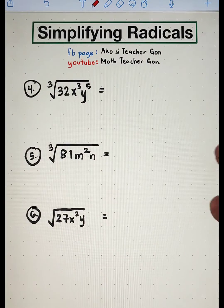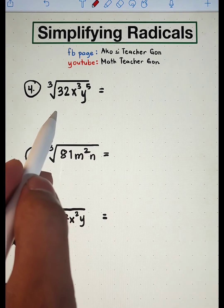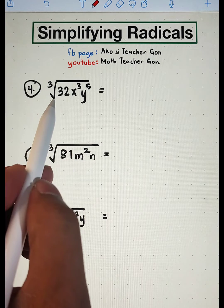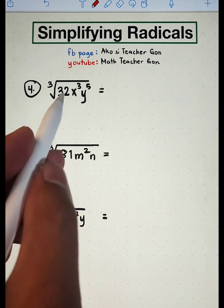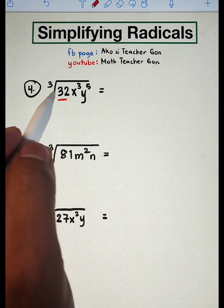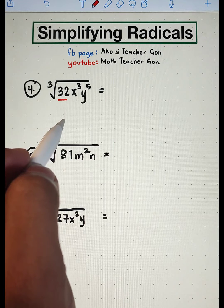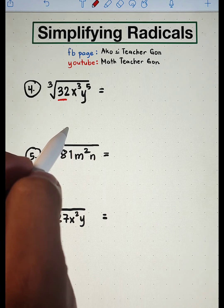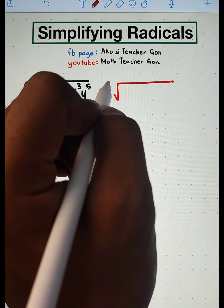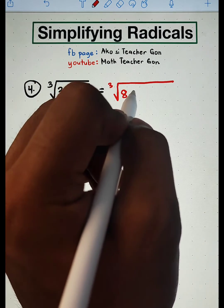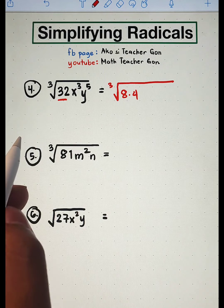Let us go with item number 4. For number 4, we are given the cube root of 32 x raised to 3 y raised to 5. Here, we can factor out 32. The factors are 8 times 4. Factor out the cube root of 8 times 4, because 8 is a perfect cube. This one is a perfect cube, so it will remain x cubed.